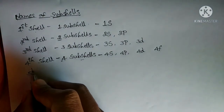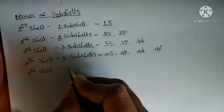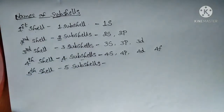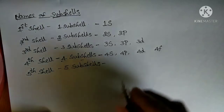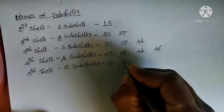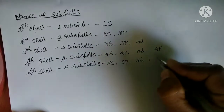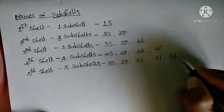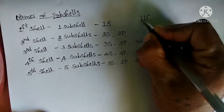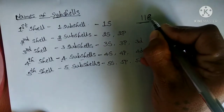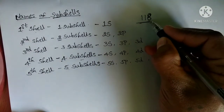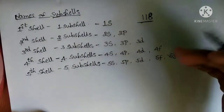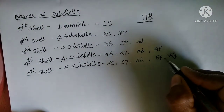In the fifth shell, five subshells are present. If you know the shell number it is very easy to know how many subshells are present. The names are 5s, 5p, 5d, 5f, and 5g. However, among the 118 total elements we have, all electrons are filled only up to 4f — no electron is present in 5g, and we will discuss this in further videos.